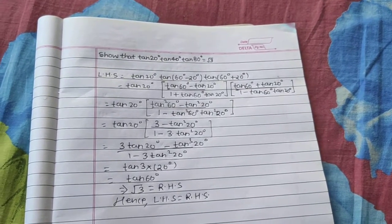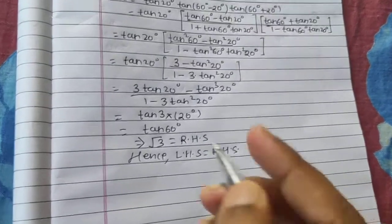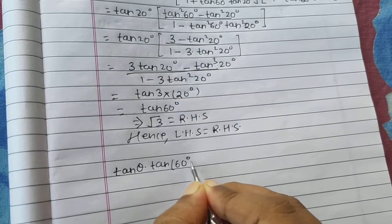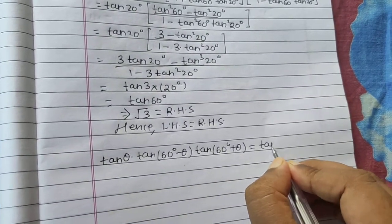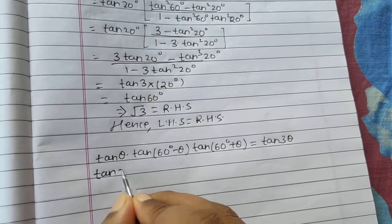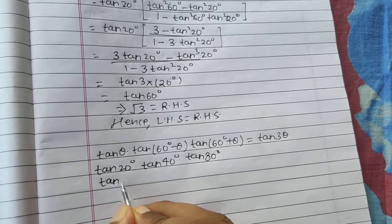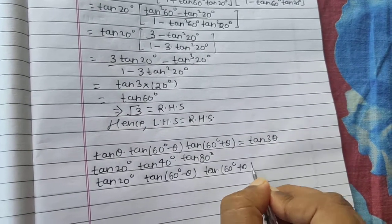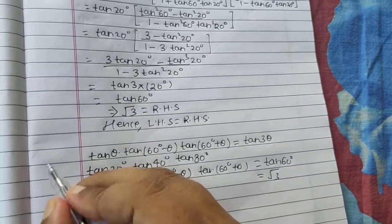Now coming to the short method, which is preferable in objective papers. If we have tan θ · tan(60° − θ) · tan(60° + θ), we can directly write tan3θ as the answer. In this question we have tan20°, tan40°, and tan80°. Here θ = 20°, 60° − θ = 40°, and 60° + θ = 80°. So tan(3×20°) = tan60° = √3. That's the short trick.